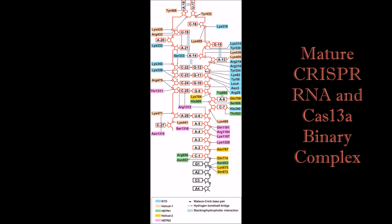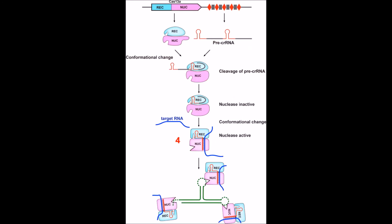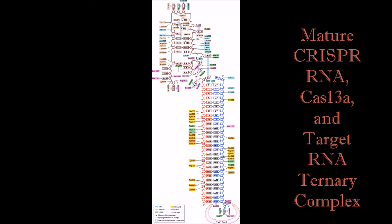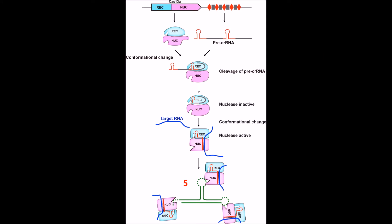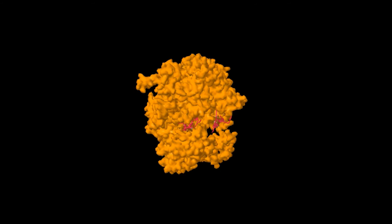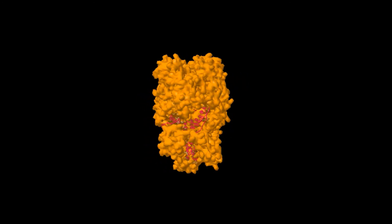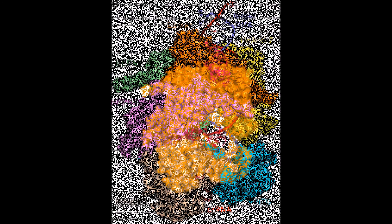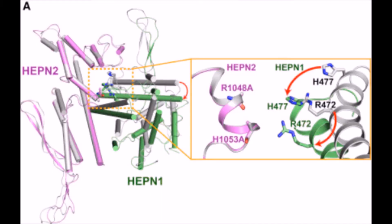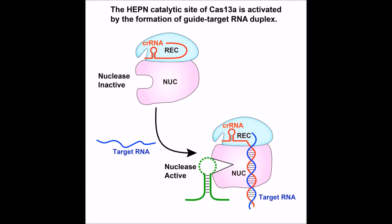Once the mature CRISPR RNA is bound, the Cas13a-CRISPR RNA complex is able to bind specifically to a homologous target RNA sequence. Unlike Cas9, where binding of a target double-stranded DNA sequence elicits specific cutting, binding of the target single-stranded RNA to Cas13a allows nonspecific, promiscuous RNase activity to be exhibited. When the target RNA binds, Cas13a undergoes a significant conformational change that activates its nonspecific RNase abilities. The HEPN1 domain moves towards the HEPN2 domain, placing catalytic histidine and arginine residues into contact. Because this catalytic site is exposed and not internal like the catalytic site of Cas9, Cas13a is able to cleave free single-stranded RNA in solution and function as a nonspecific RNase.